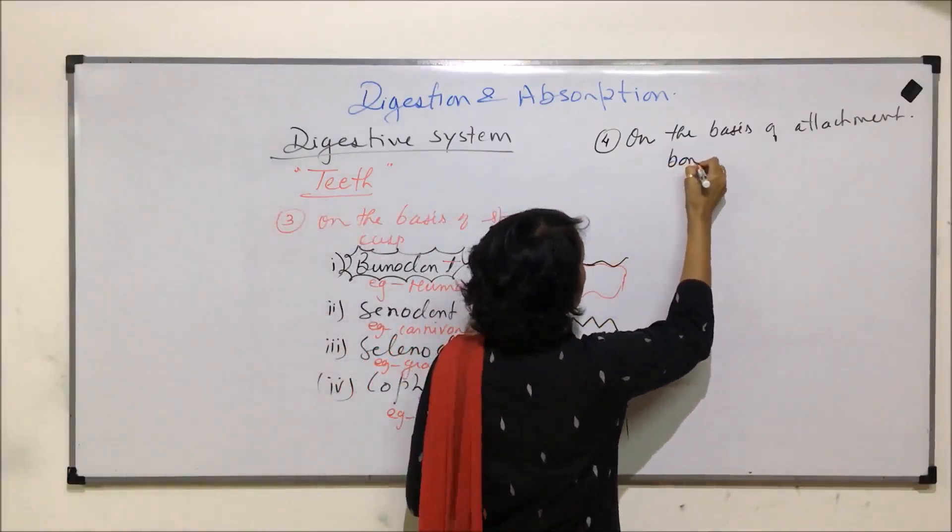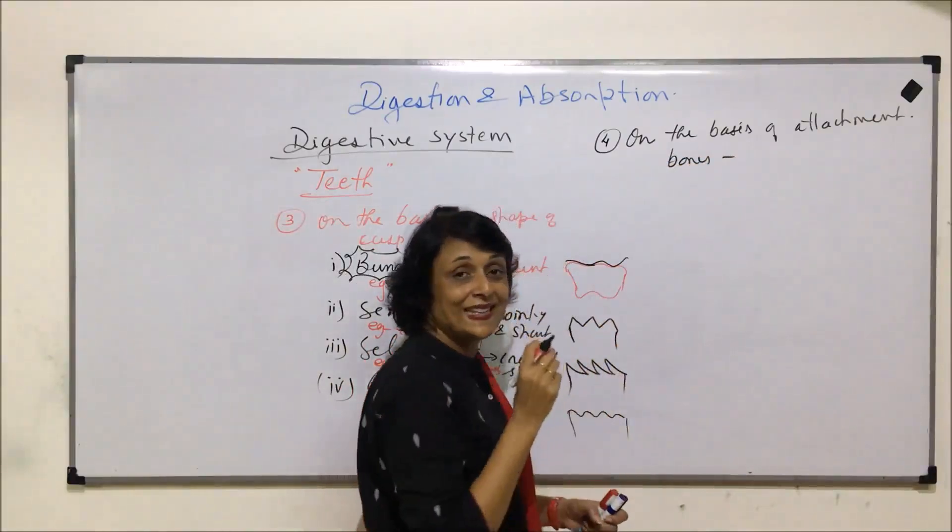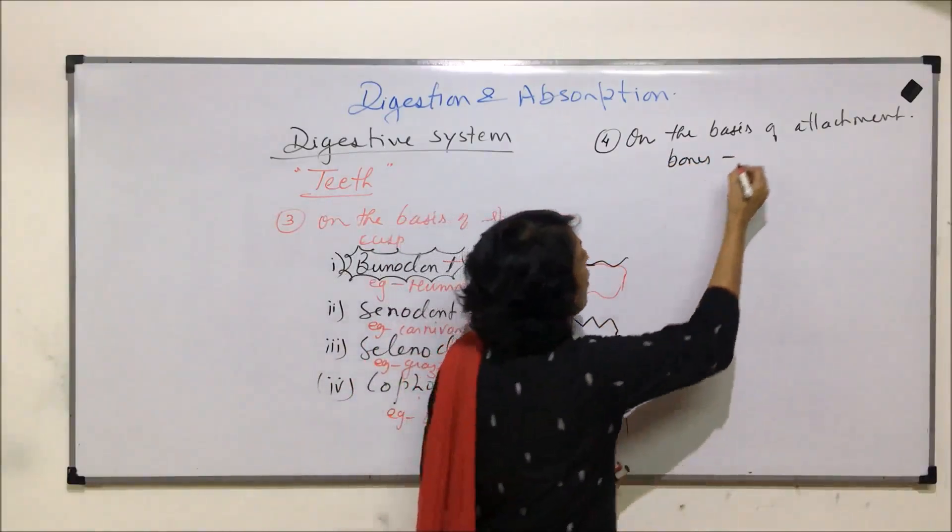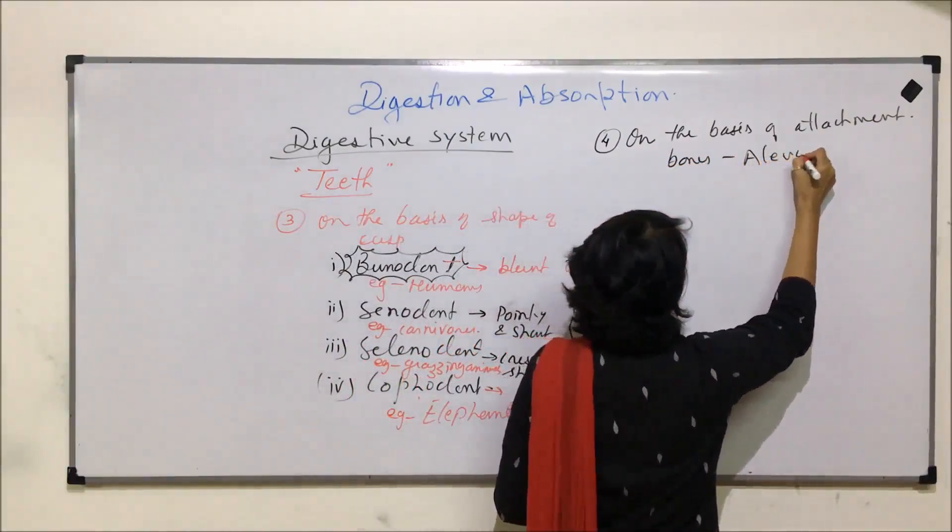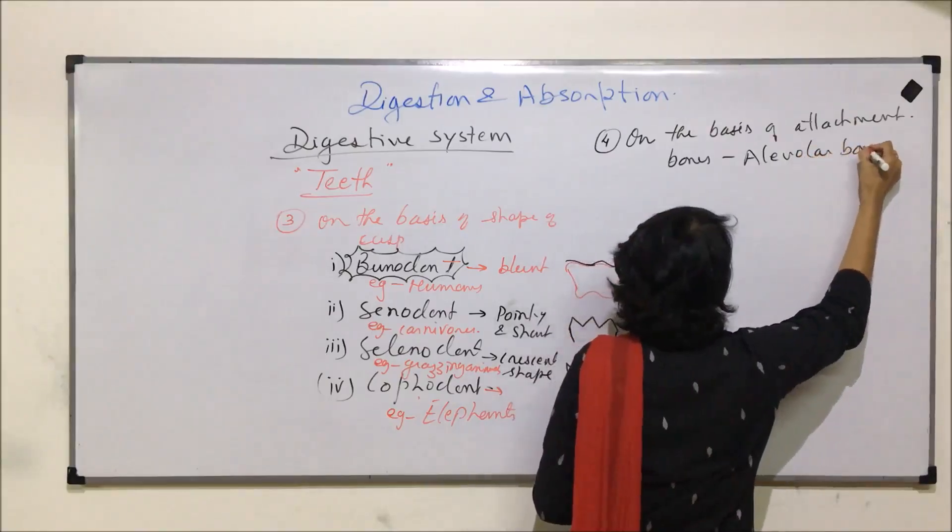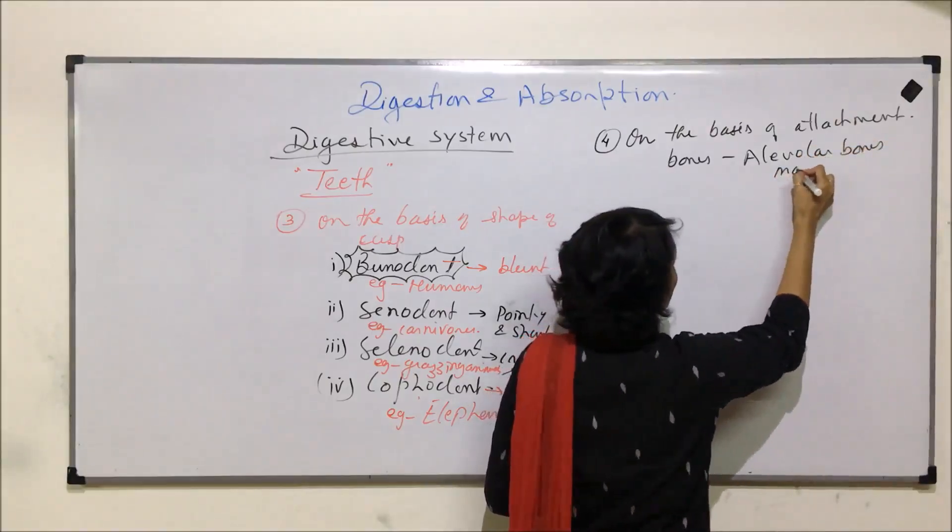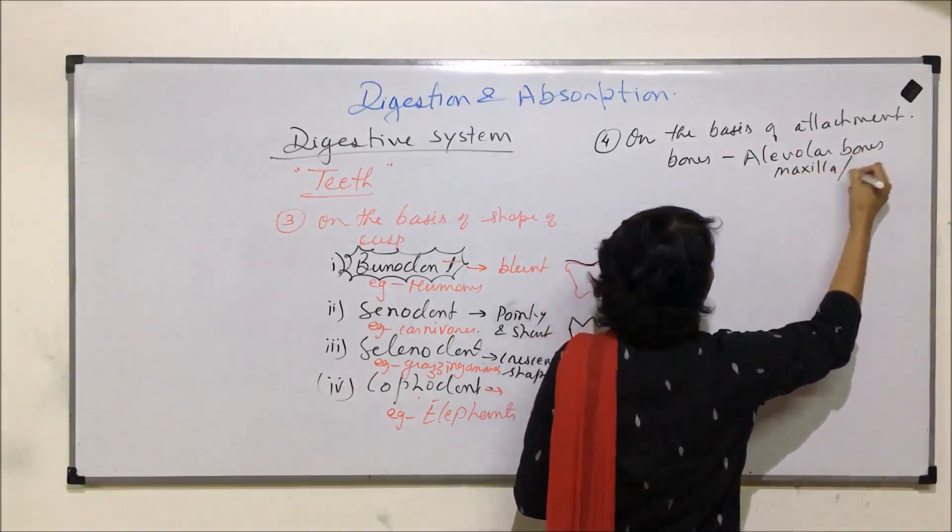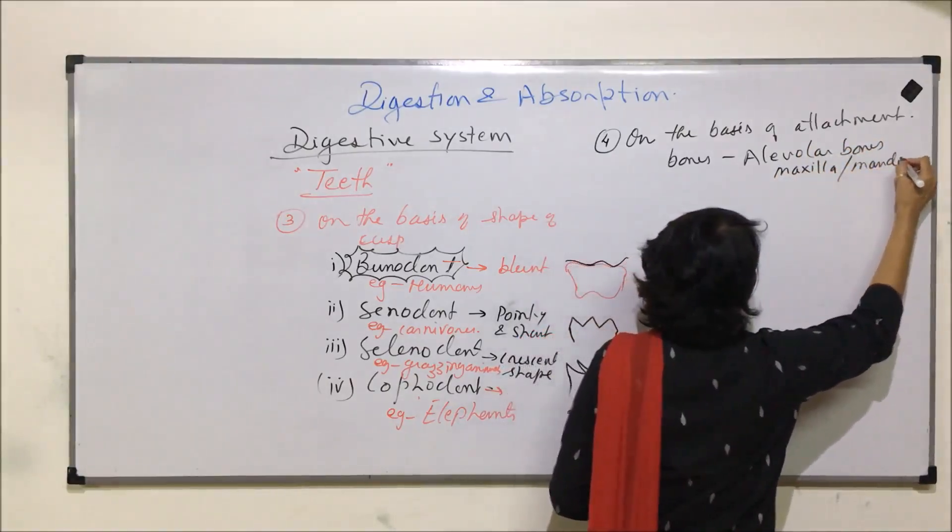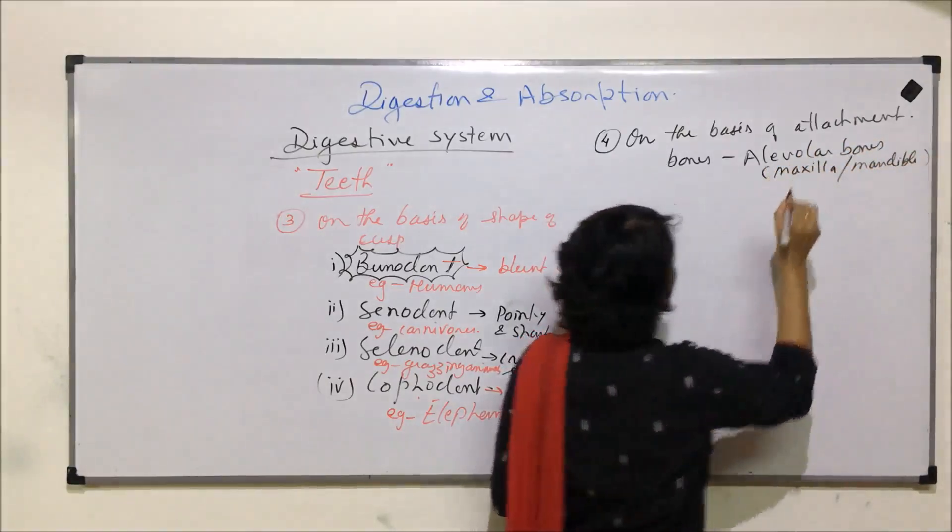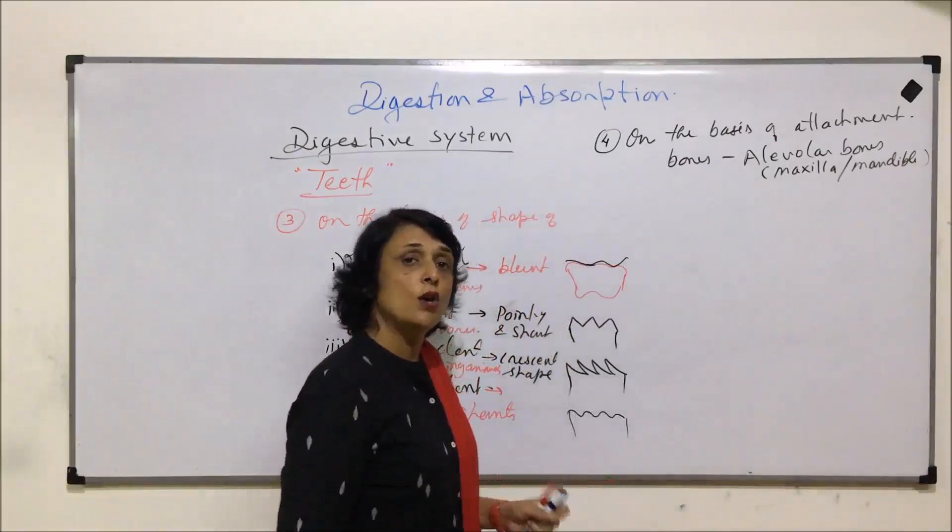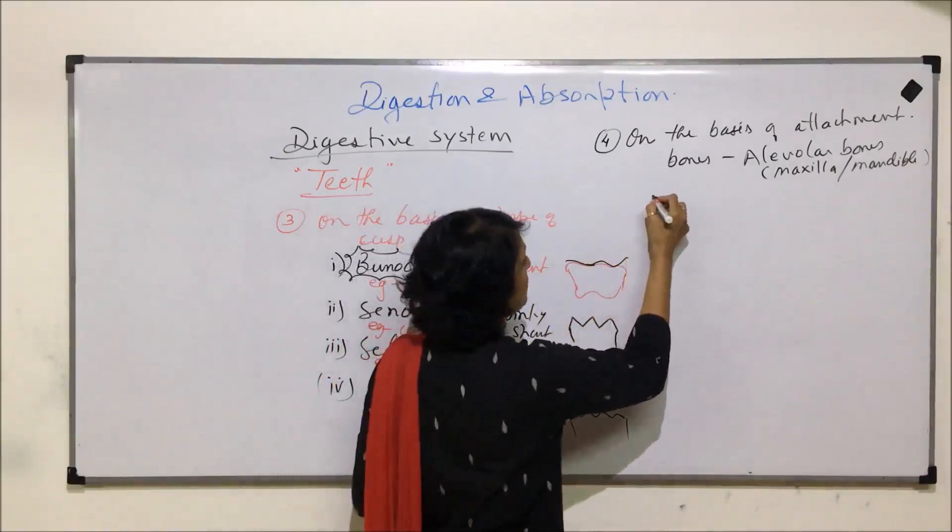But there are sockets in these bones and these sockets are known as alveoli. So the bones in which these teeth are placed, they are called alveolar bones. And they can be maxilla or mandible, depending upon if we are talking of upper or lower jaw.